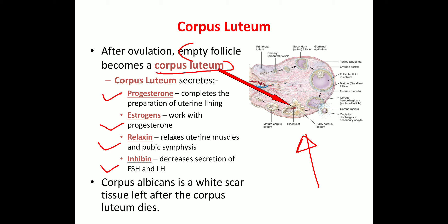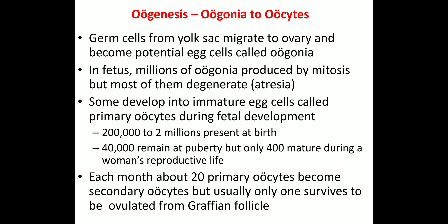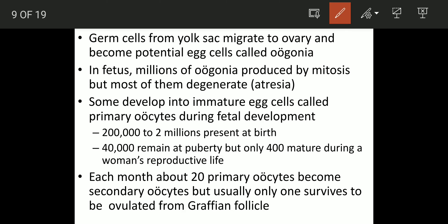Corpus albicans is the white scar tissue left after the corpus luteum degrades. Now oogenesis — the stage from oogonia to oocytes. These germ cells from the yolk sac migrate to the ovary and become potential egg cells called oogonia. In fetal life there are millions of oogonia produced by mitosis, but most degenerate by atresia.